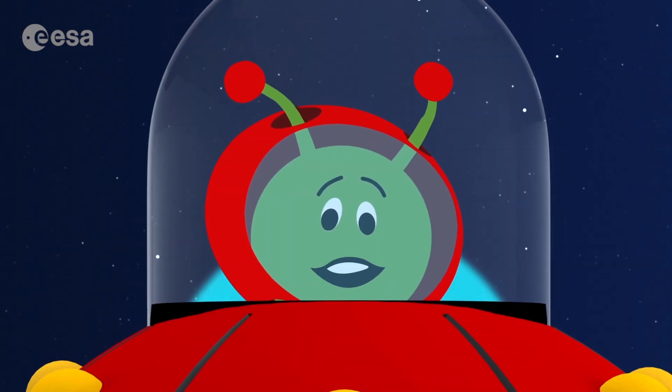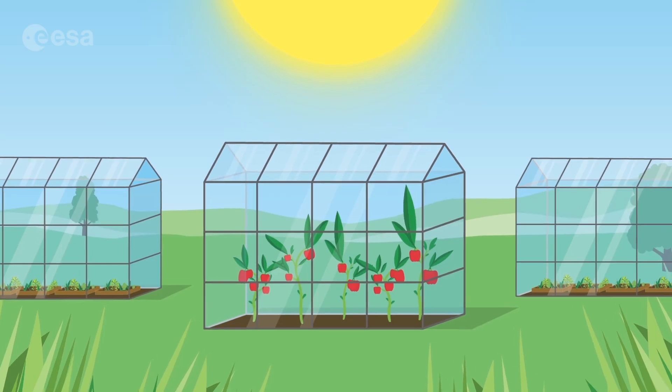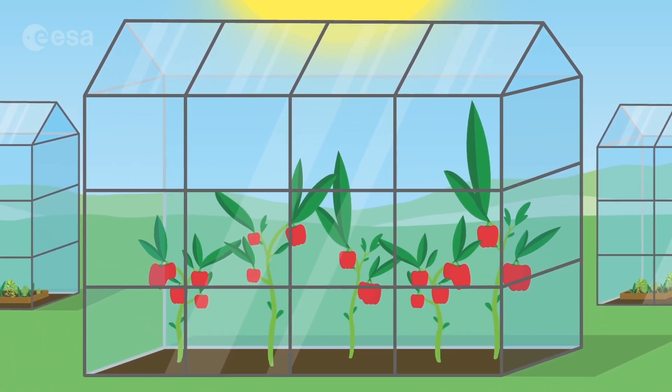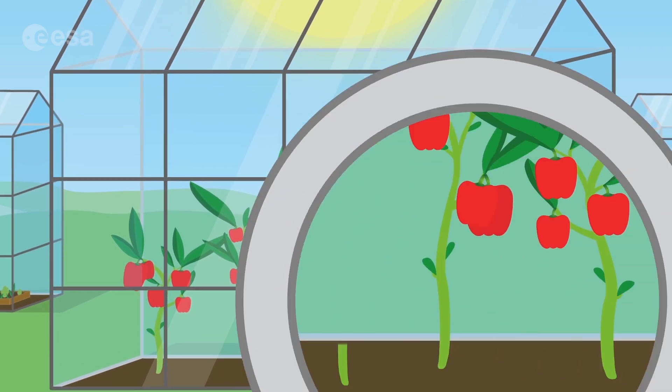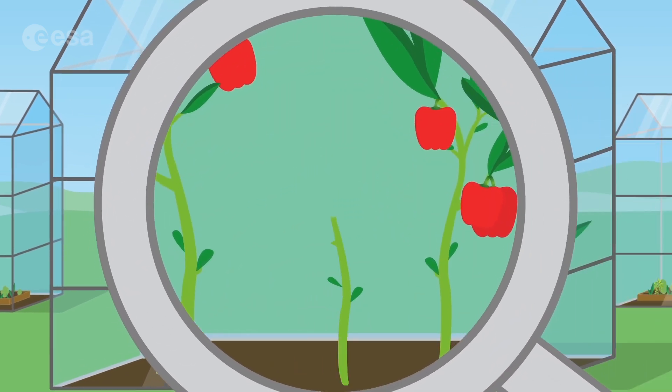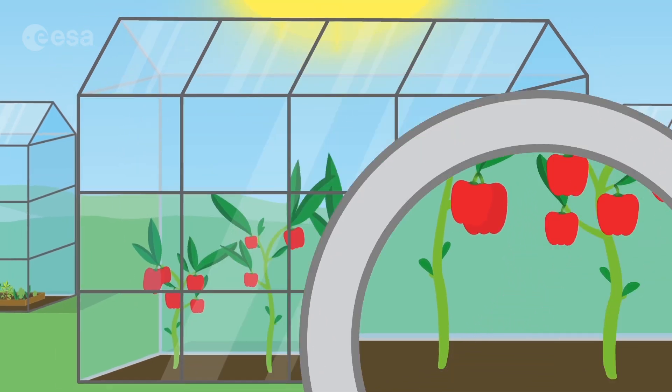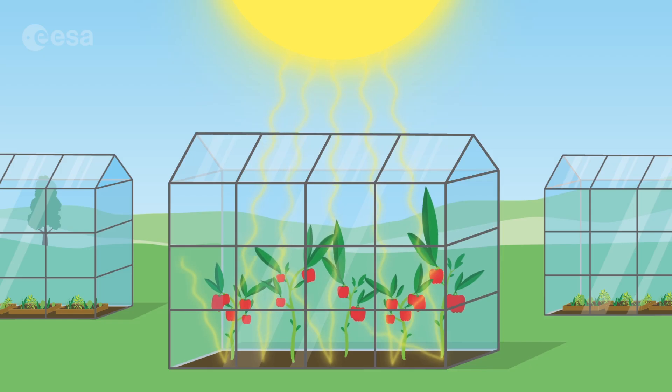But what's a greenhouse? Greenhouses are those funny-looking houses with glass walls and roofs that you see in gardens and fields. They're called green because they're used to grow flowers and vegetables. Sunlight shines on the glass and warms the air inside, making it nice for the plants to grow. The glass also prevents the heat from escaping, keeping the temperature just right for the plants.